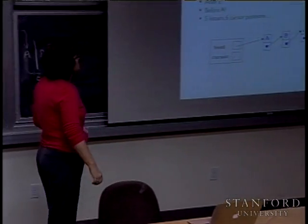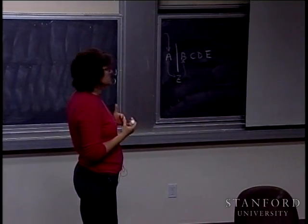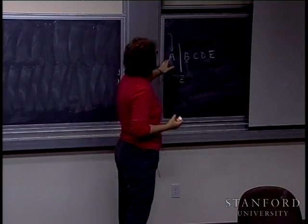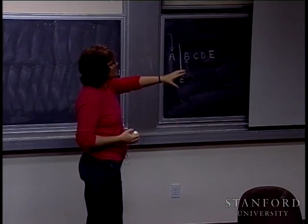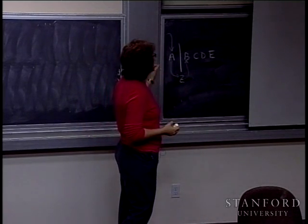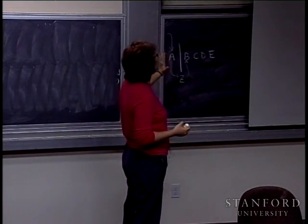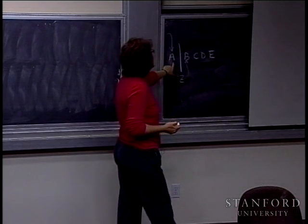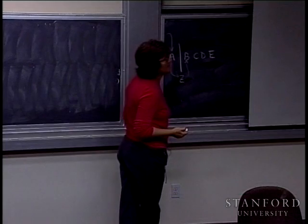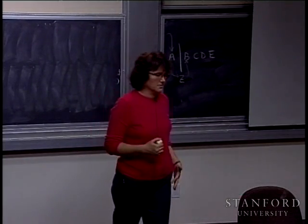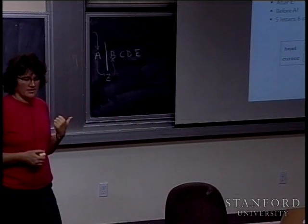There's another subtlety: with five letters there are actually six cursor positions — it could be at the very beginning, between any characters, or at the very end. With our current scheme I can identify the five positions that have at least one character to the left. Pointing to A means it's after A, pointing to B means after B, and so on down to E. But I don't have a cursor position representing when the cursor is at the very beginning of the buffer.